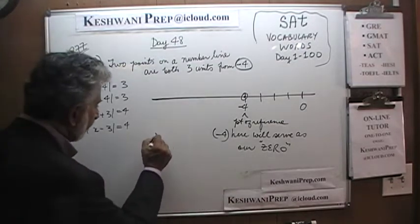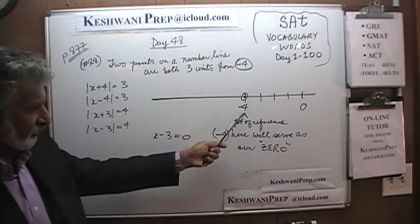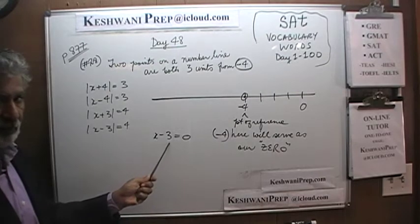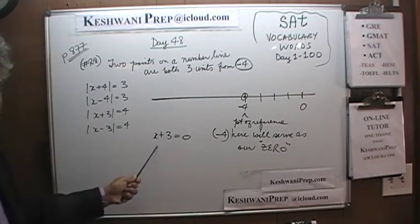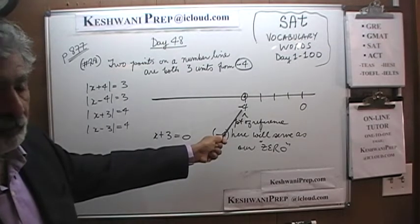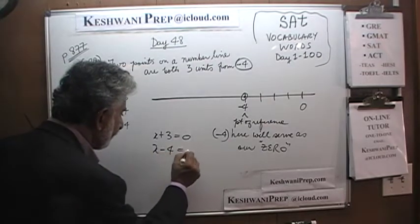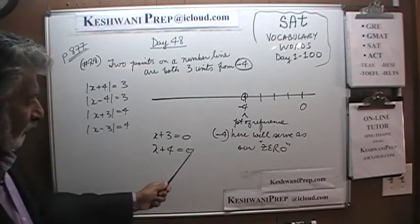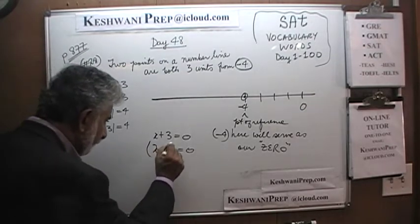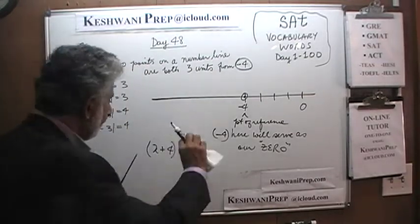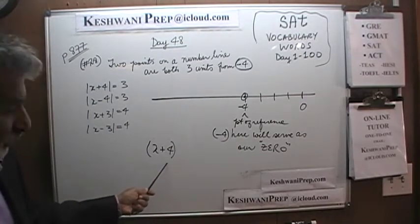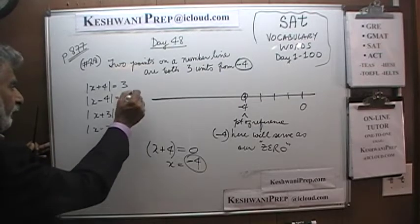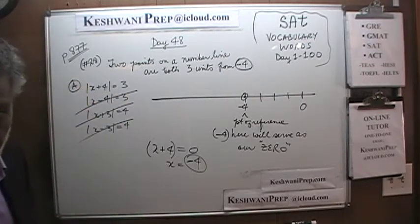Let's start with x minus 3. If we set this equal to zero, that gives us x equals positive 3 — not negative 4. What about x minus 4? That gives x equals negative 3 — not negative 4 either. What about x plus 4? x plus 4 set equal to zero gives us x equals negative 4. That's our point of reference — our zero. So b, c, and d are wrong. The answer is A.